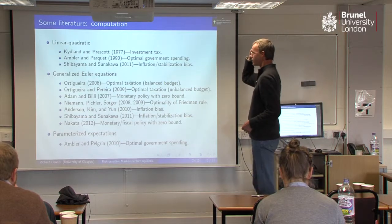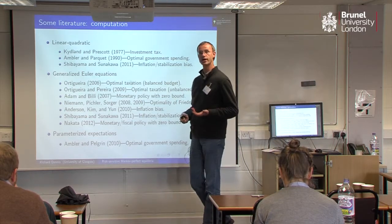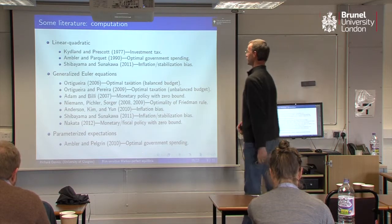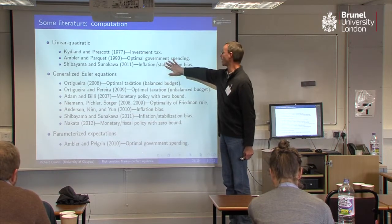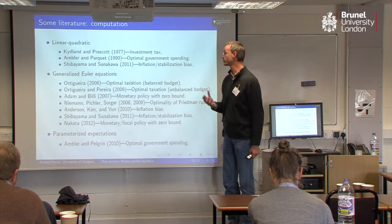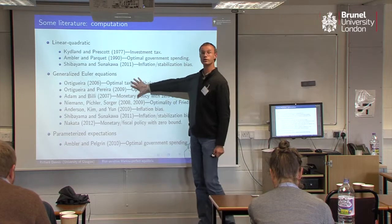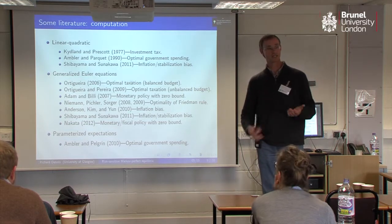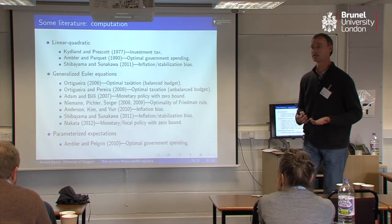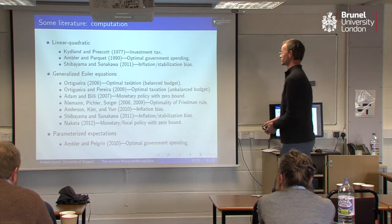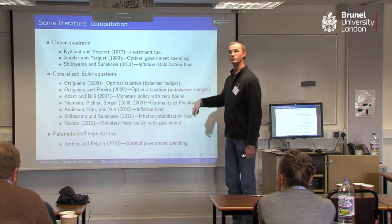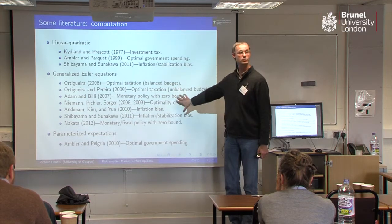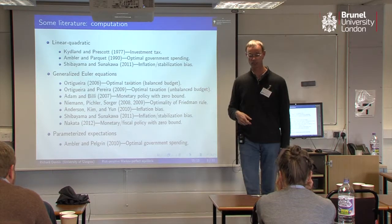On the computation side, I'm going to show you a method based on value function iteration. The more standard way of solving these types of non-linear models is to use either linear quadratic methods — which aren't so useful in the Markov perfect environment — or to use generalised Euler equations. Generalised Euler equations are just like a standard set of first-order conditions that you might get from a Lagrangian, but they're generalised in the sense that you've got not just decision rules in them but derivatives of decision rules, which makes it more complicated to solve. This type of approach is not really amenable to the inclusion of risk sensitivity.